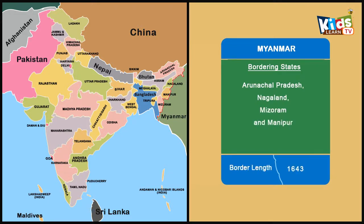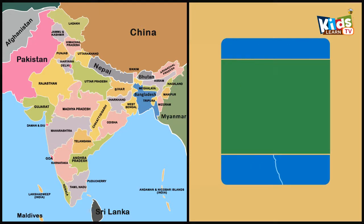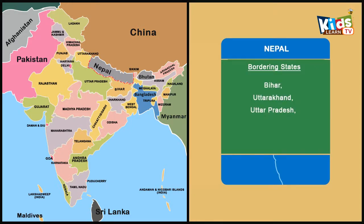The Indian states Bihar, Uttarakhand, Uttar Pradesh, Sikkim and West Bengal share the border with Nepal. The border length is 1751 km.